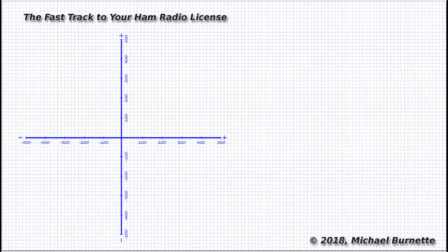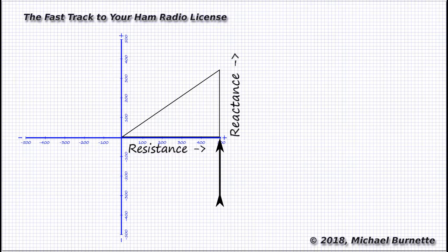As you learned when we covered phase angles, the angle between the base and the hypotenuse equals the number of degrees the current is out of phase with the voltage. So, here we have a resistance plotted as a point on the x-axis of our graph. That's x the axis, not x for reactance. Don't get confused. And reactance is plotted on the y-axis.